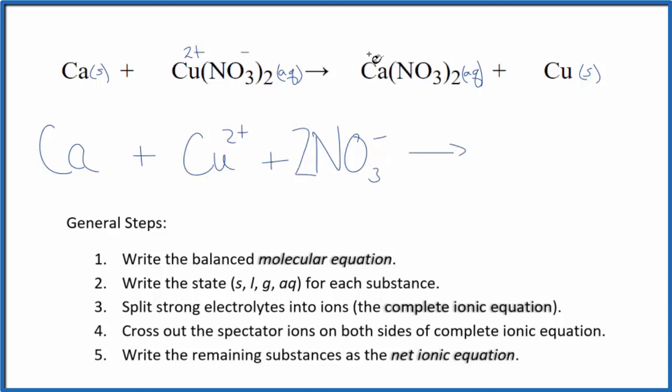For the products, calcium always has a 2 plus charge. It's in group 2 on the periodic table. We said the nitrate is negative. So we'll have Ca 2+, plus the nitrate, NO3-. Again, we'll have two of those, plus then we have our copper up here, plus Cu.